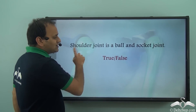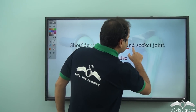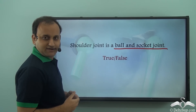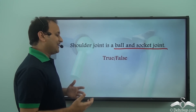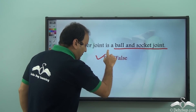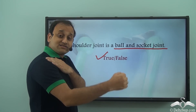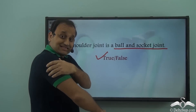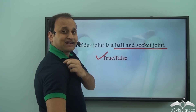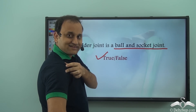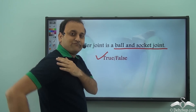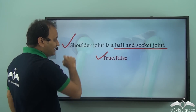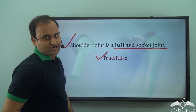So the shoulder joint is a ball and socket joint — is that true or false? It is definitely true. In the case of the shoulder, it is a freely moving joint, which is a ball and socket joint, because this bone fits into a socket-like structure here and as a result it is freely movable. So the shoulder joint is a ball and socket joint.